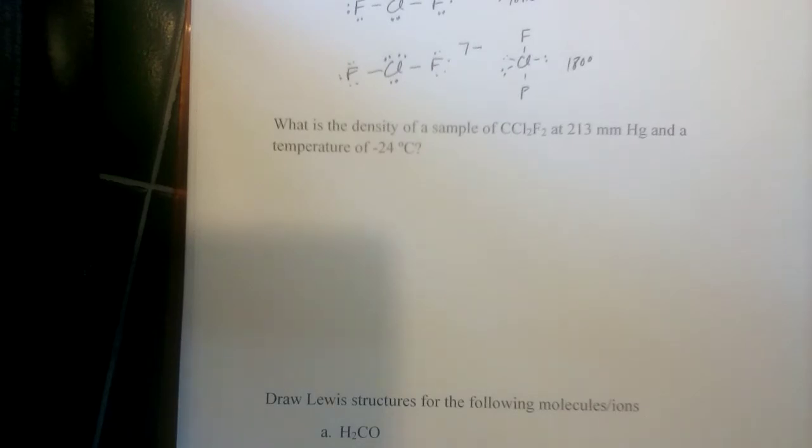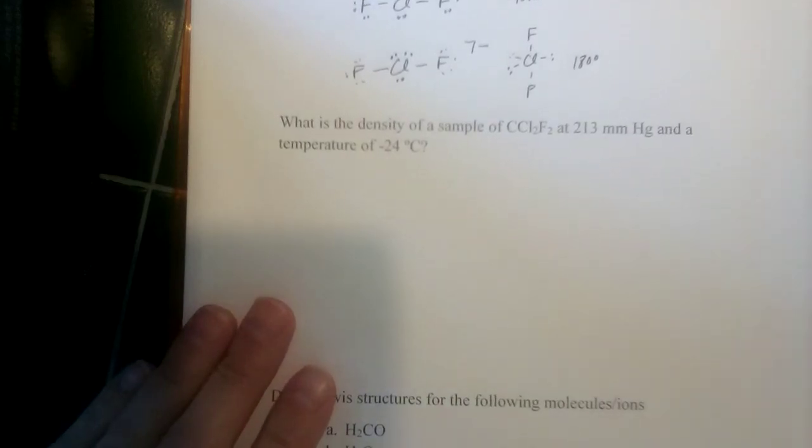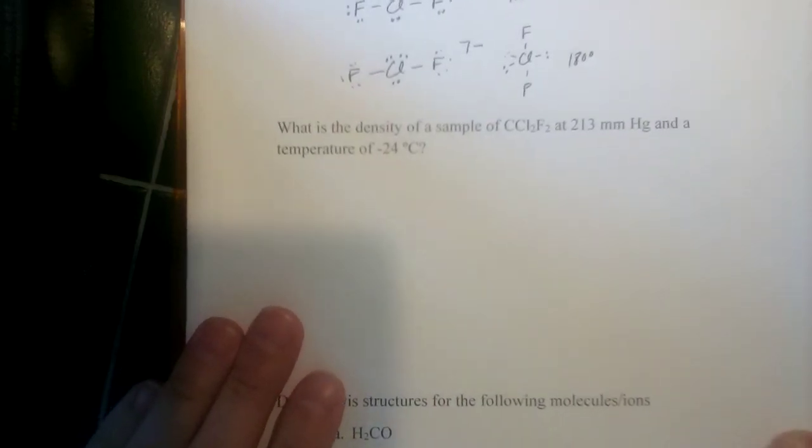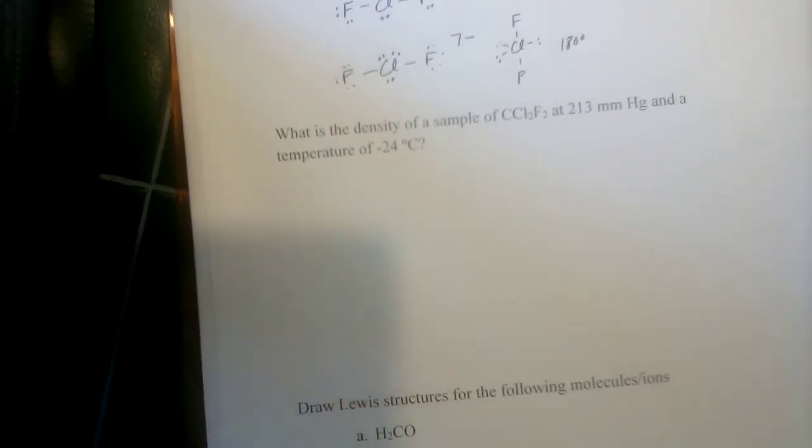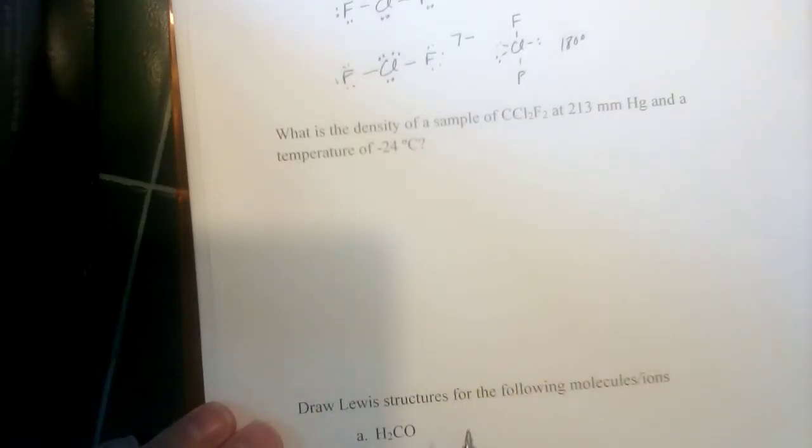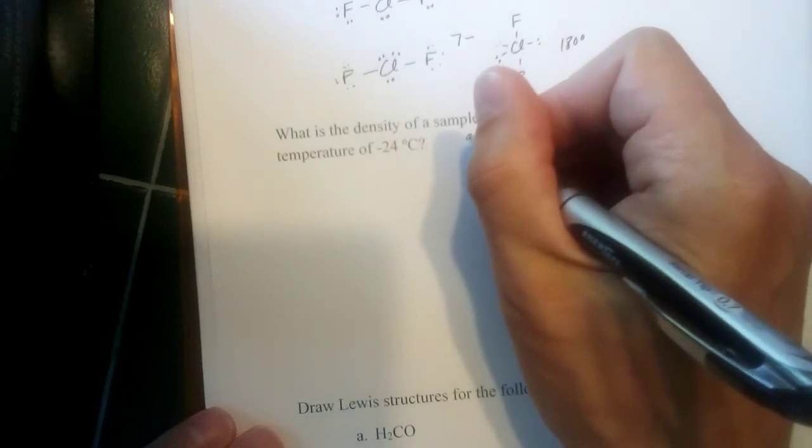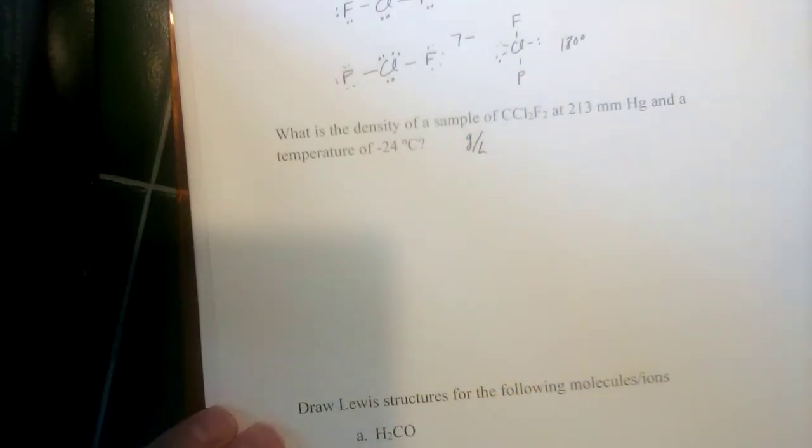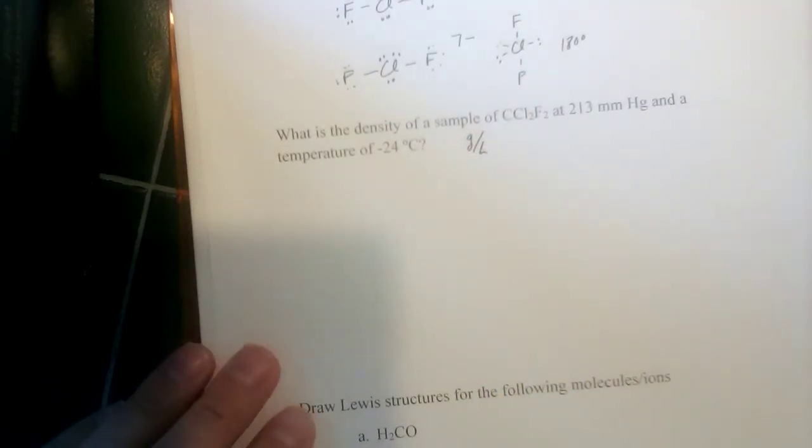All right, second question. What is the density of a sample of CCl2F2 at 213 millimeters of mercury and a temperature of minus 24 degrees C? So density, this is a gas law problem, right? That's going to be a gas at temperature. We've got a temperature. We've got a pressure. And we're trying to figure out the density. Now, density is mass per unit volume. So in the case of a gas, that would be grams per liter.